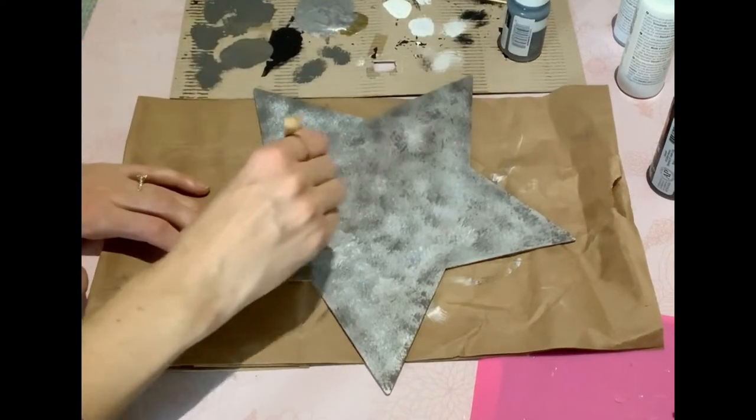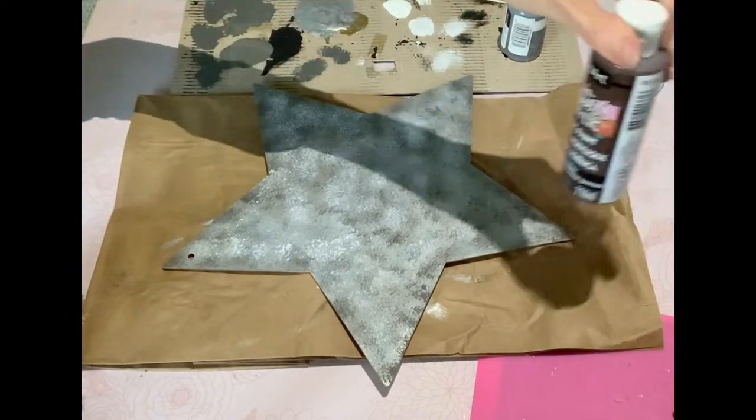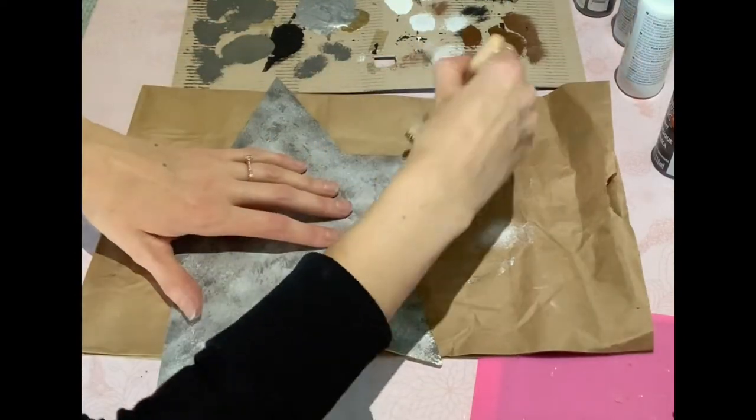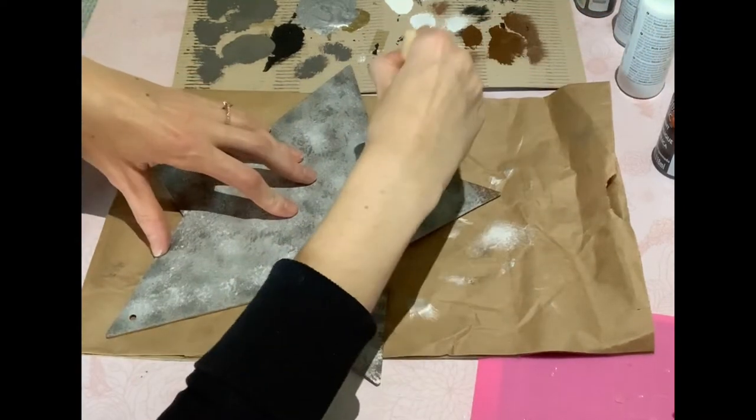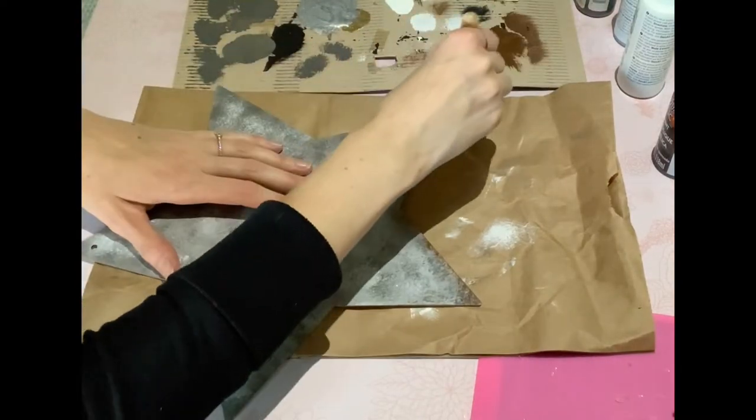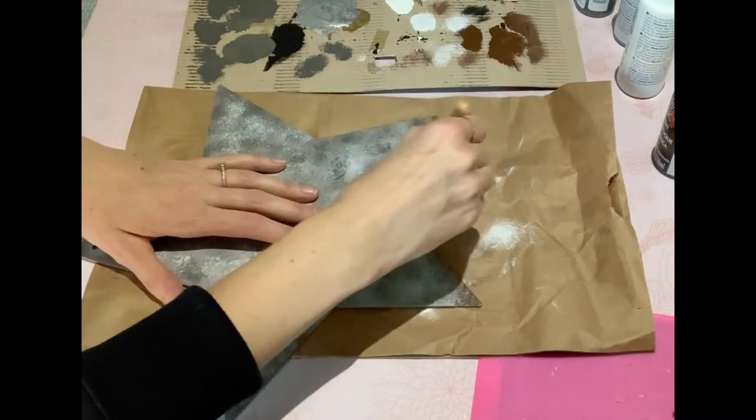Once you're happy with the results, I took some burnt umber from the Dollarama, and this is what's going to give it that rusted weathered look. I'm taking my stencil brush and just going very gently around the edges of the star. You can go a little bit light or a little bit darker, depending on what you want.